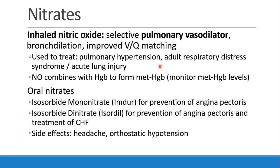Nitric oxide can be delivered in an inhaled form, and in that case it acts as a selective pulmonary vasodilator. It causes bronchodilation, it improves V/Q matching, and this is very useful in patients who have severe pulmonary hypertension, adult respiratory distress syndrome, or acute lung injury. The nitric oxide combines with hemoglobin and forms methemoglobin, and for that reason patients on inhaled nitric oxide therapy need to have their methemoglobin levels monitored carefully.